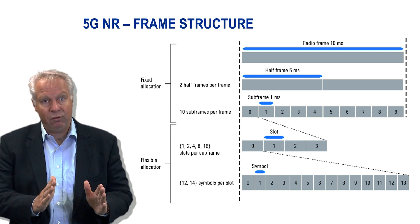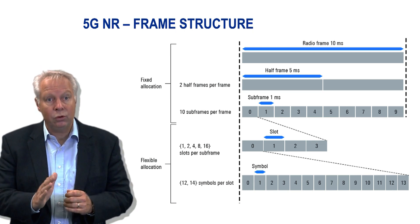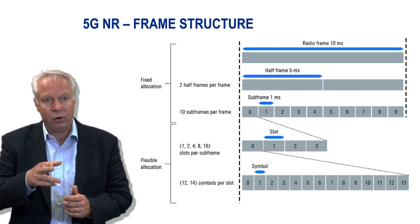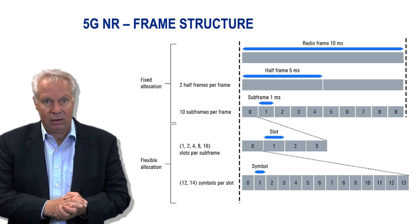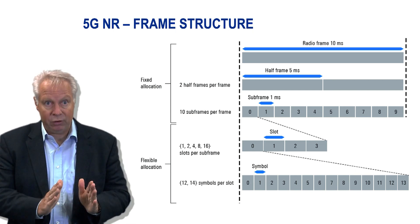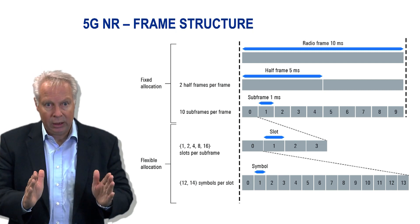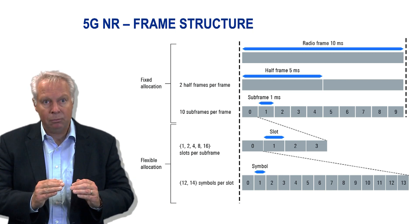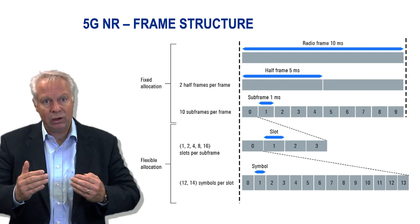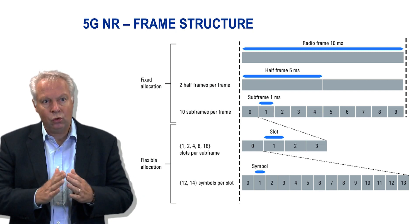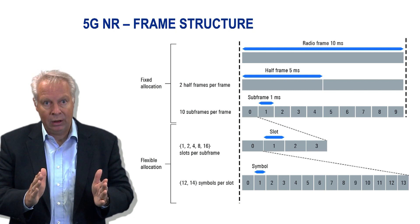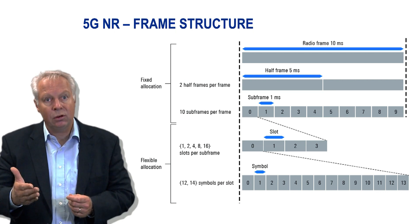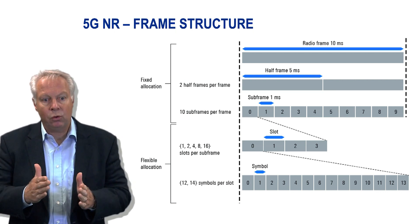Then we have a so-called half-frame of 5 milliseconds, especially used in the synchronization blocks. The SSB operates in a burst structure, and one SSB burst with a number of occasions always lasts 5 milliseconds. Based on that, we have a subframe definition — a subframe lasts 1 millisecond in 5G. But based on these constant values, we have a flexible part, because the subcarrier spacing — and reciprocally the symbol duration — leads to different slot lengths. So we have either one slot equal to 1 millisecond, 2 slots, 4 slots, or 16 slots per subframe.